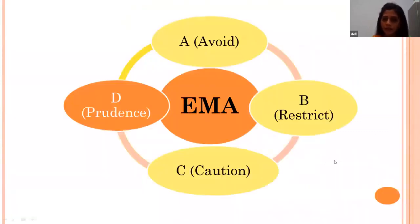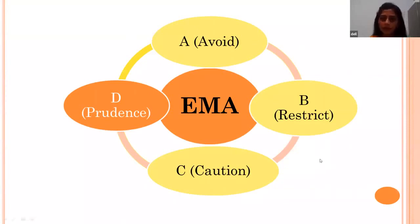The European Medicines Agency (EMA) categorizes antibiotics into four categories: A, B, C, and D. The purpose is to promote responsible use in both human and veterinary practice. Category A includes antibiotics unauthorized for use in veterinary medicine — they cannot be used in food-producing animals like sheep and goat. Category B antibiotics are restricted; they include quinolones, fluoroquinolones, third and fourth generation cephalosporins, and polymyxins.